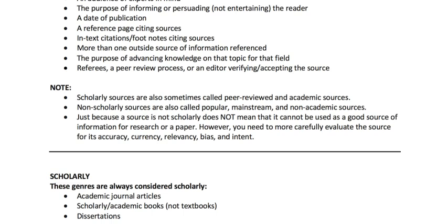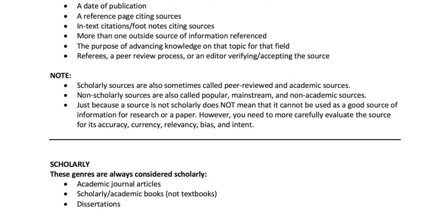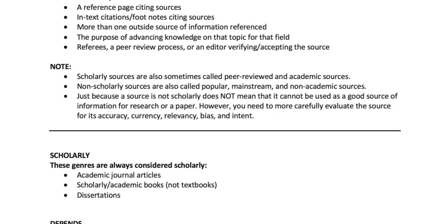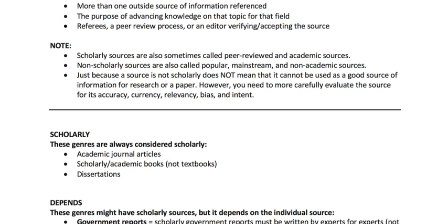The purpose is never to entertain the reader, so you're not going to have pictures and interesting things to look at — they're going to be very dry publications. There will always be a date of publication, so you will never have N.D. or no date as an option for scholarly sources. They will have a reference page citing sources used to research and support the topic, and they will have some kind of in-text citation, whether APA, MLA, Turabian, or CMS with footnotes. For a five-page journal article, it's not unusual to have 30 sources, most of which are scholarly themselves.